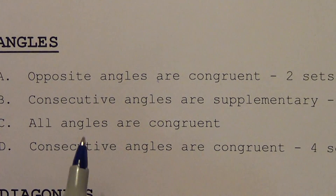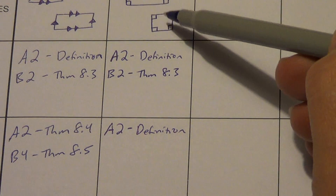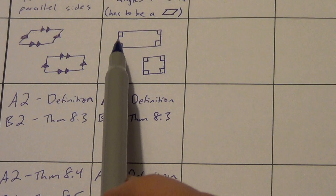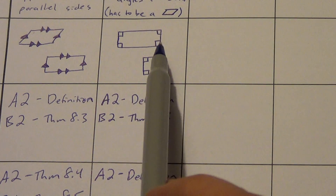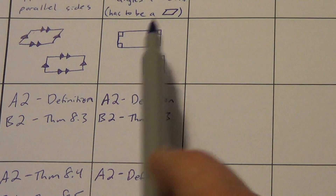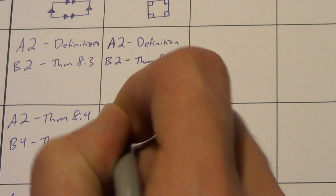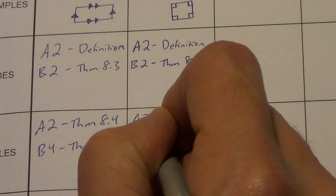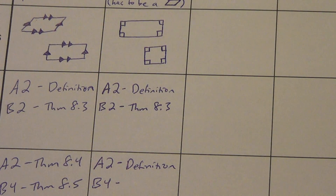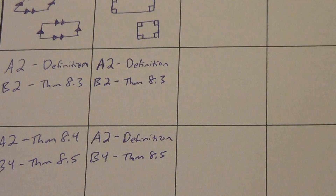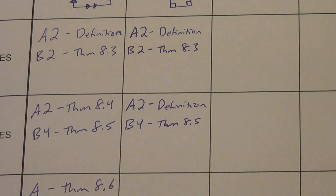Consecutive angles are supplementary. We know they're all 90 degrees, so any two consecutive angles add up to 180. That gives us four sets of consecutive supplementary angles. We could use theorem 8.5: in any parallelogram, which includes rectangles, there are four sets of consecutive supplementary angles.